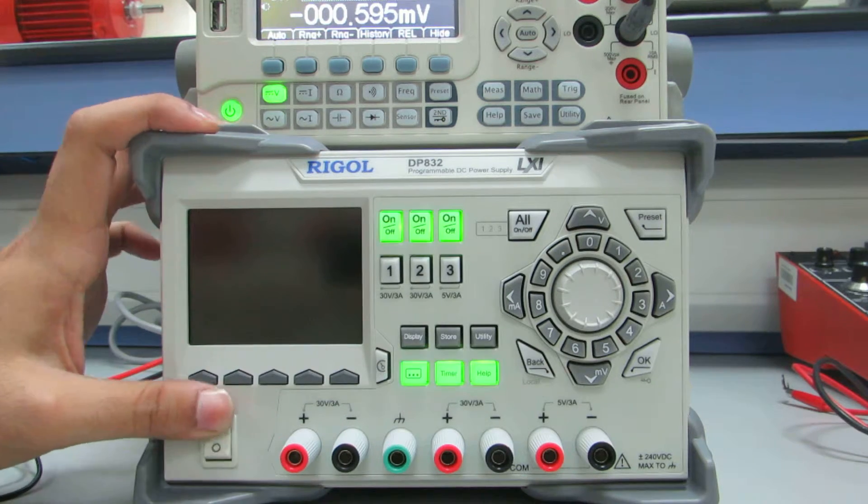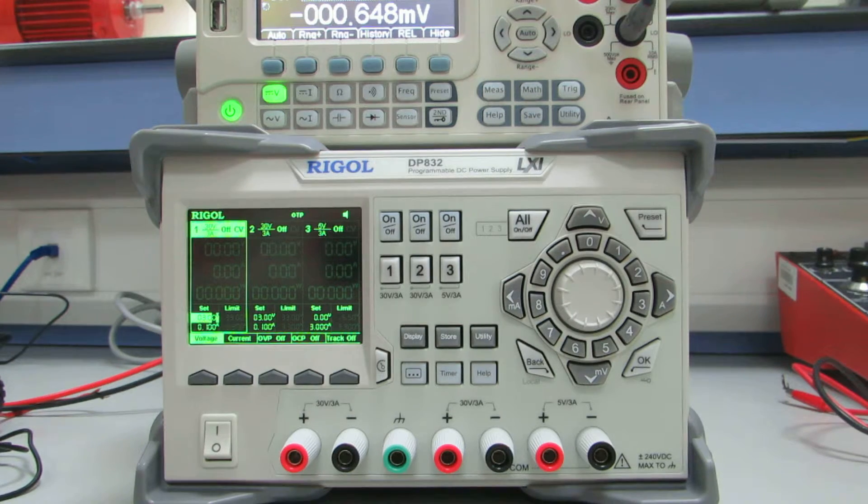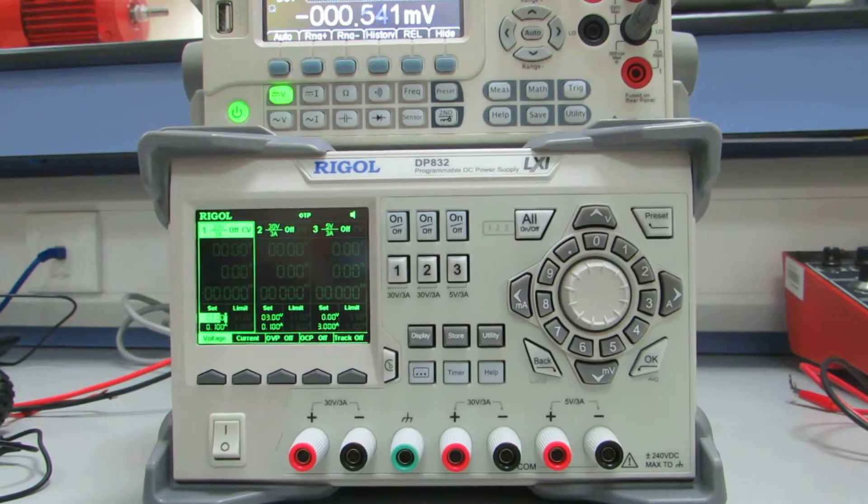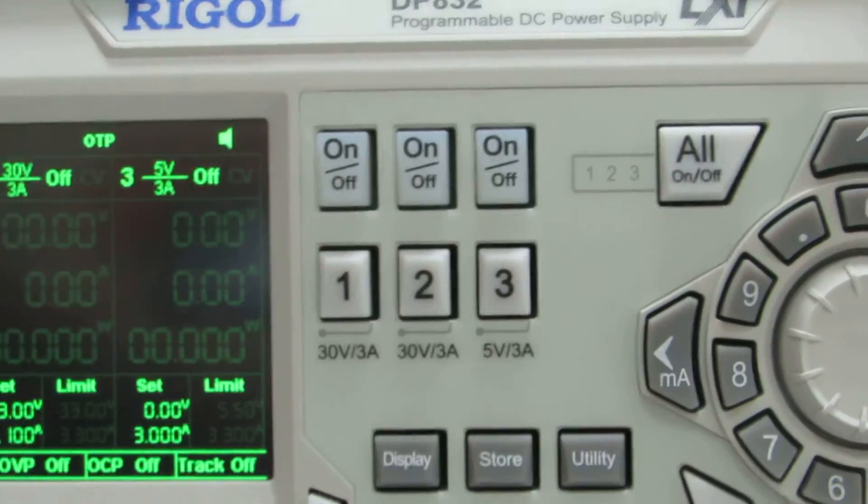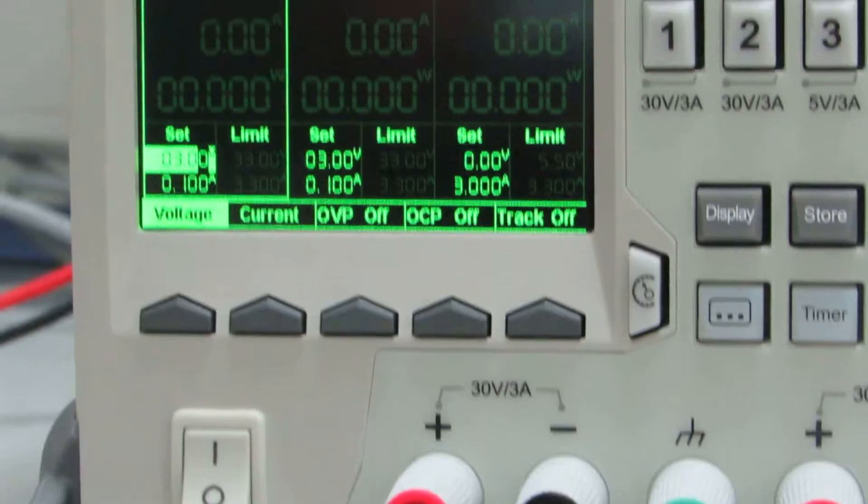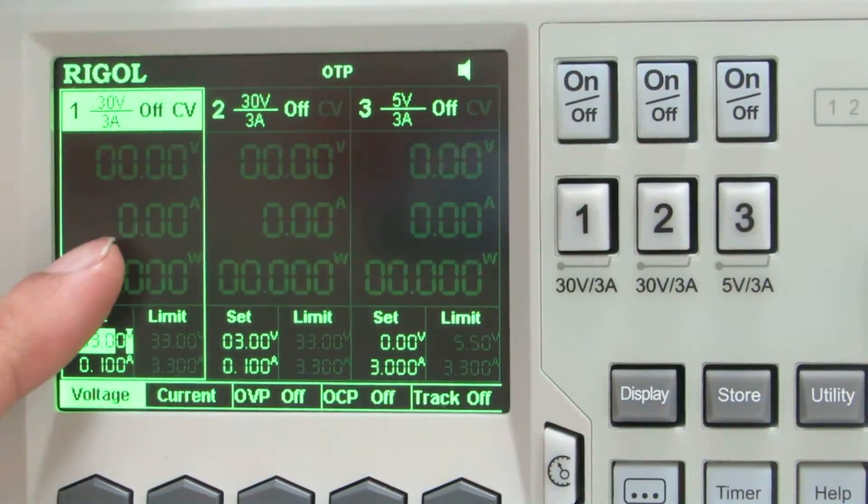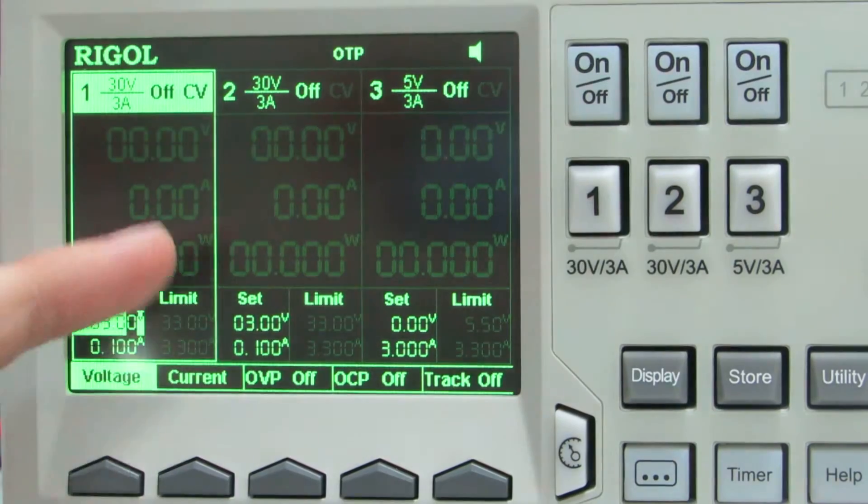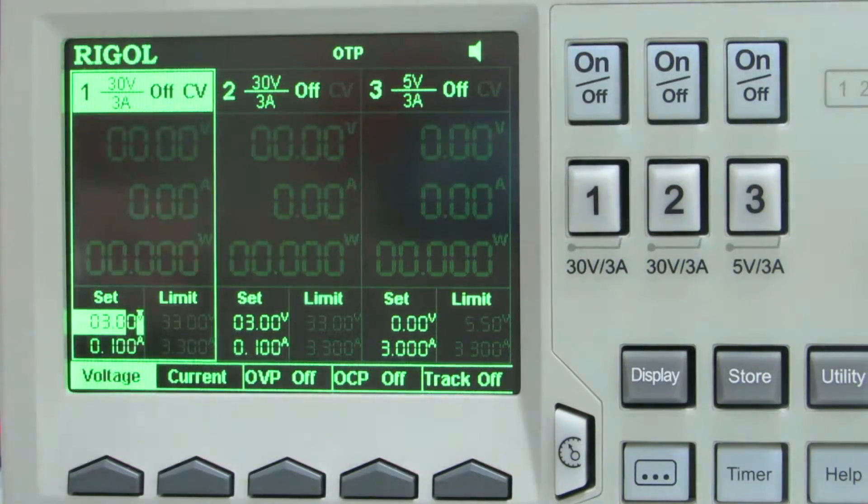Now first you start off the supply by turning it on. Wait for it to boot up. Okay, now when you look at the interface screen you have three displays. Let me zoom in on it. You have one screen for channel 1, one screen for channel 2, and one screen for channel 3. So this is 30 volts, 30 volts, and this one is 5 volts.